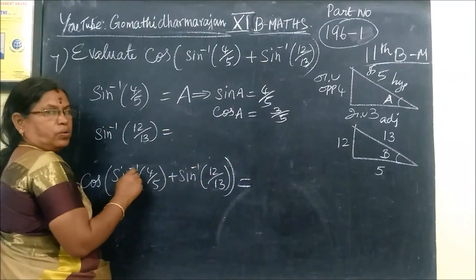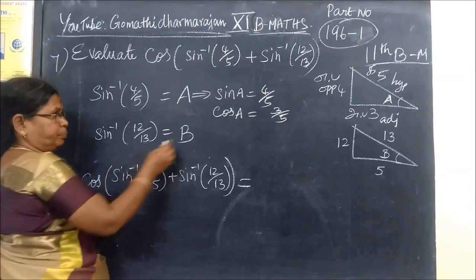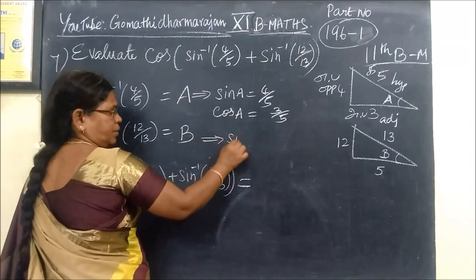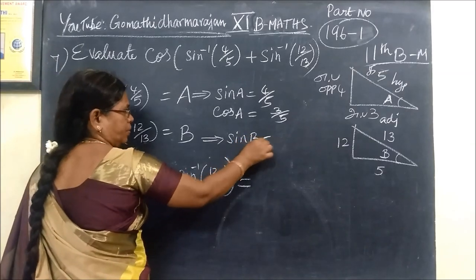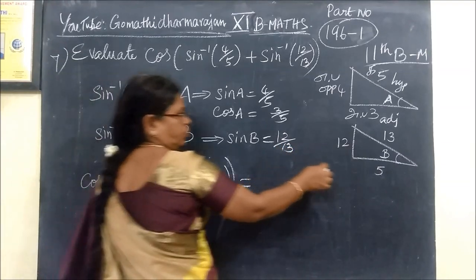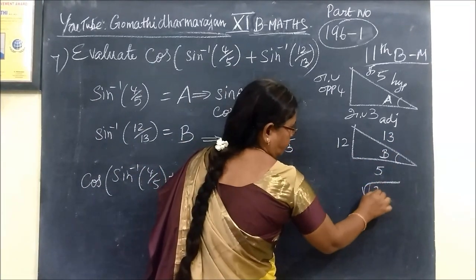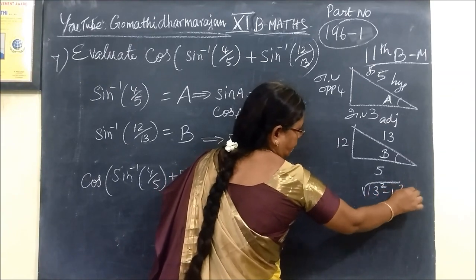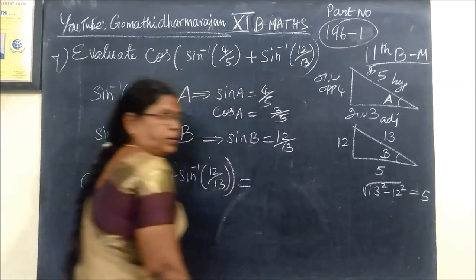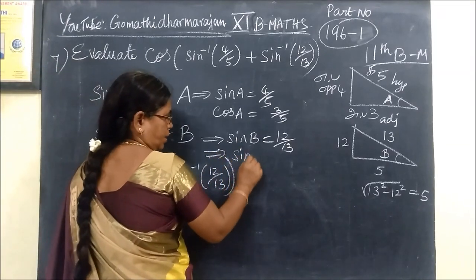This is sin inverse 12 by 13. Then this is some B. So this implies sin B equal to 12 by 13. This is 12, this is 13, this is 5. This means root of 13. This implies cos A equals cos B, which is 5 by 13.